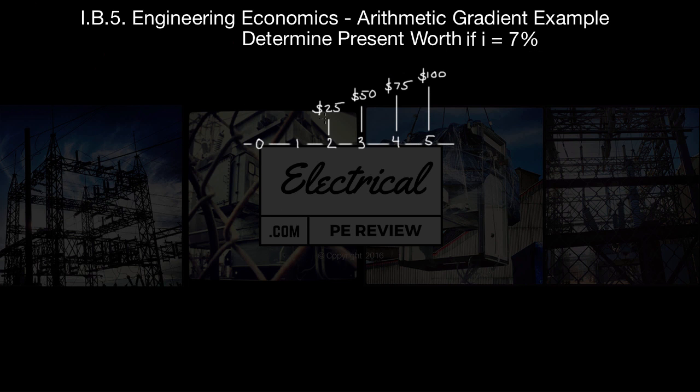we know this is a gradient because we have nothing on period 1. And up here, this would be our g value. At 3, this would be our 2 times g. This would be our 3 times g. And at 5, this would be our 4 times g.